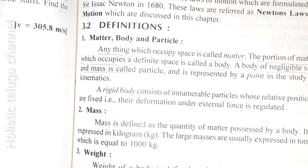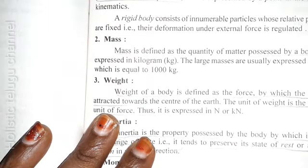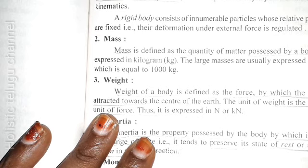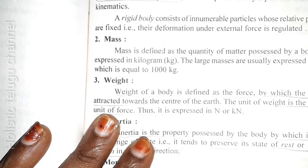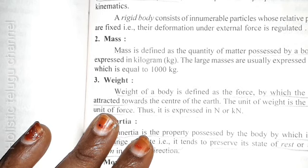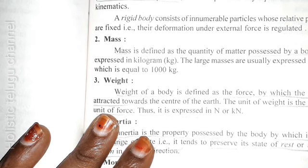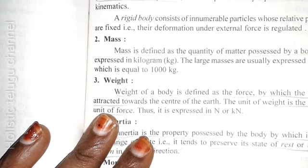A particle is represented by a point in the study of kinematics. Mass is defined as the quantity of matter possessed by a body. It is expressed in kilograms. The large masses are usually expressed in tons, which equals 1000 kgs.